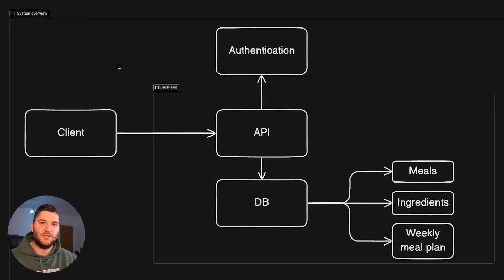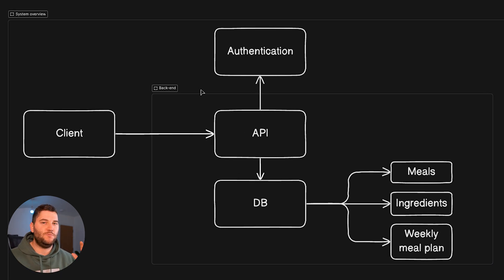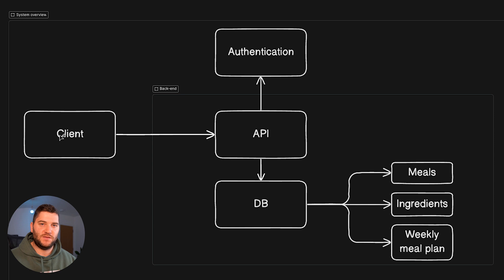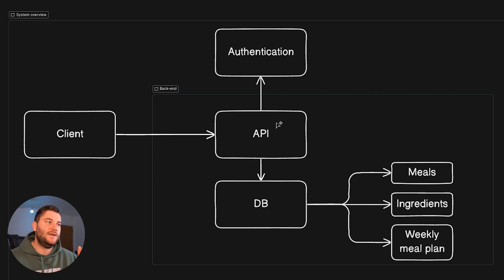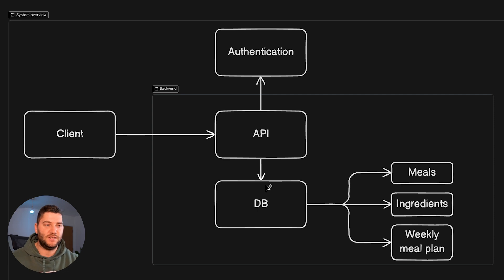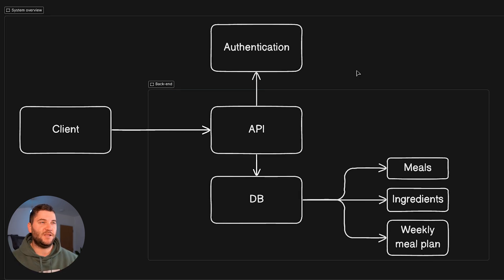Let's go and look at my system overview. This is how I envision this to work — basically putting what I had in my mind onto a diagram so I can explain what is supposed to happen. I'm going to have a client which holds the front-end stuff — this can be React or Next.js. The client will be making requests to the API, which is all the backend logic. The API will need to authenticate the user making the request, and it will have a database to store all the data for meals, ingredients, and the weekly plan.